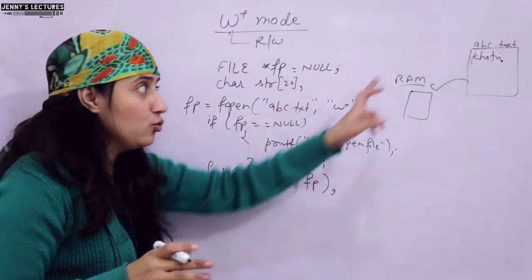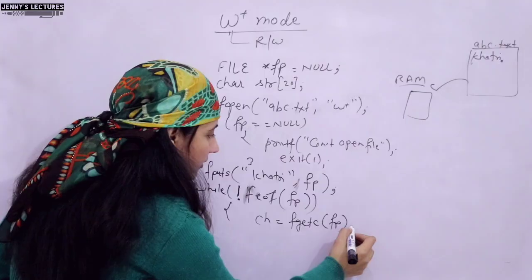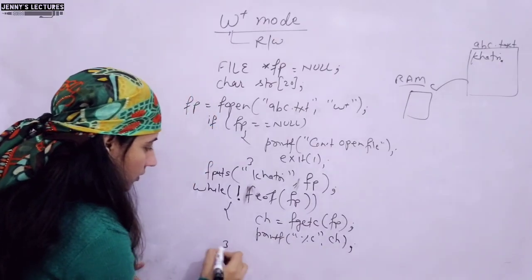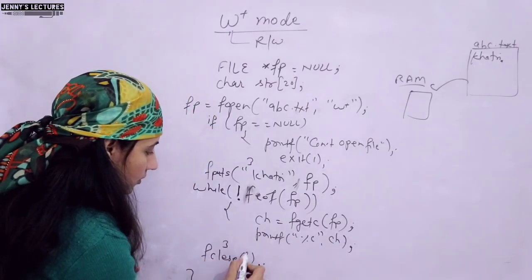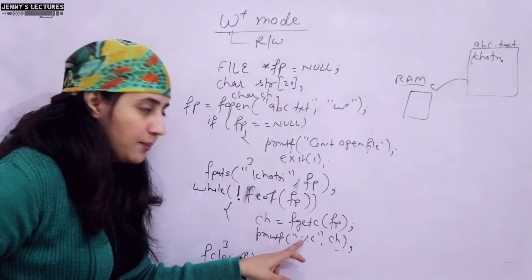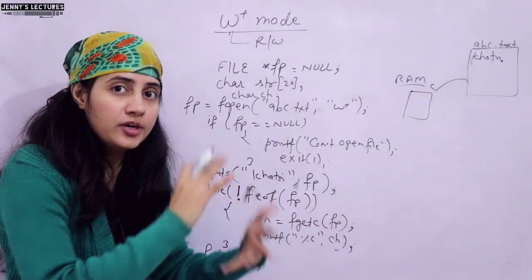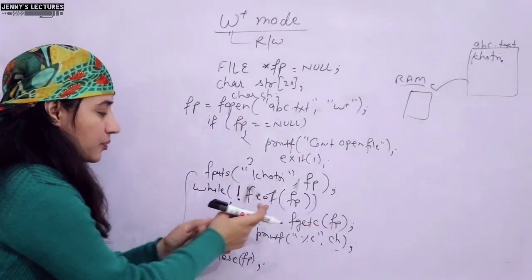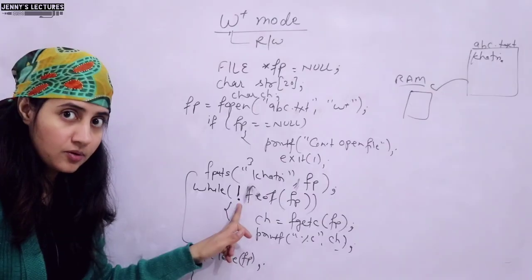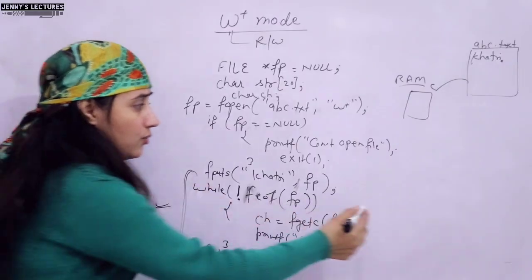Now you say you want to read this content. I'm writing a loop to read character by character and print whatever character I read. And at last, fclose FP. Now my question: will this program print 'Khatri' on the screen? No, it will not. Why? Because we wrote 'Khatri' and now the cursor — the file pointer — is at the end. The condition is while not feof(FP). Since the file pointer is at the end of file, feof returns true (1), and logical not of 1 is 0, so we do not enter the while loop. So we are not able to read this content.